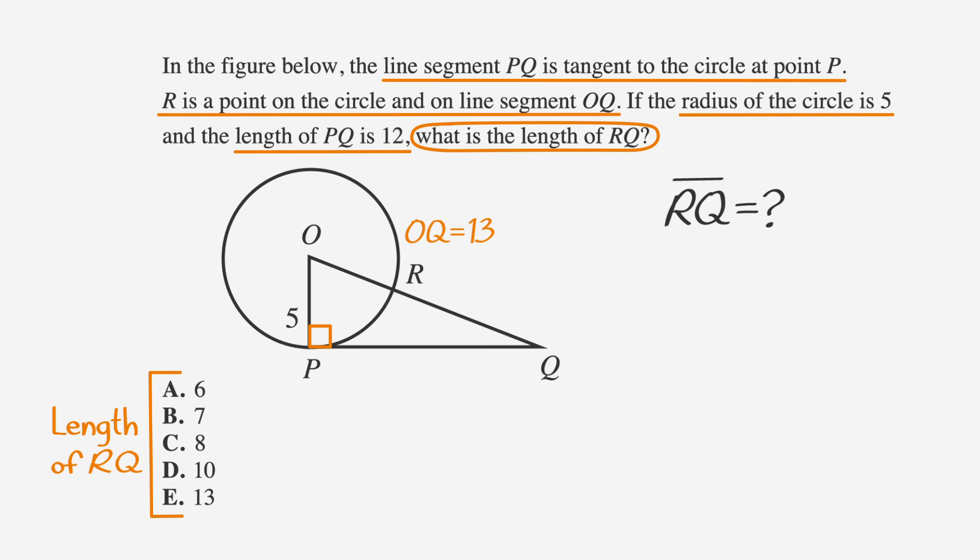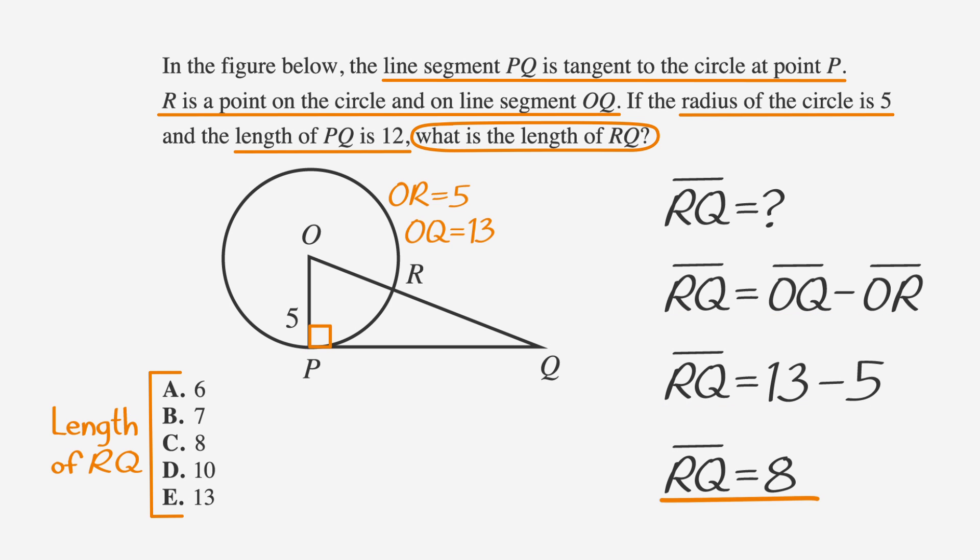But we're looking for RQ, not OQ. Since OR is the radius of the circle, we know that OR is 5. So RQ equals OQ minus OR, or 13 minus 5, which is 8. So choice C is our correct answer.